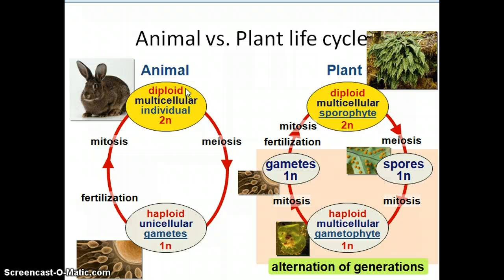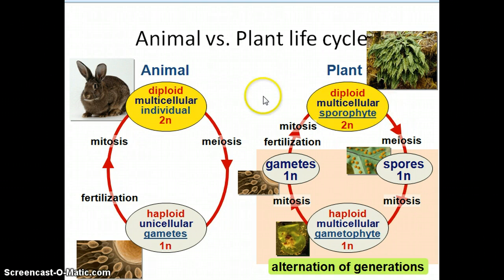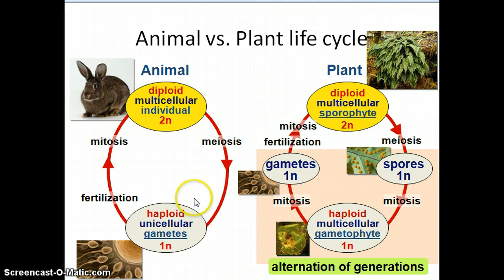Those two sets of chromosomes come from two parents — both a male and a female parent — the same for an animal as for a plant. If a plant reproduced sexually, it will have two sets of chromosomes from two different individual plants producing a diploid cell. If it reproduces asexually, it will still be diploid but with two sets of identical chromosomes. Diploid is represented as 2N, and a single set of chromosomes — a haploid cell — is represented as 1N.